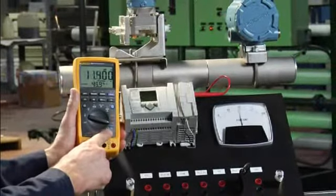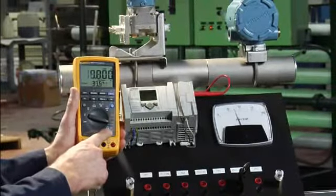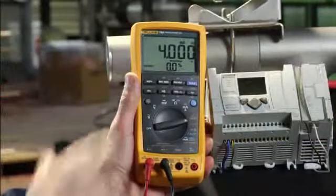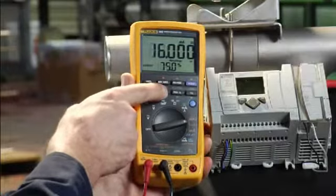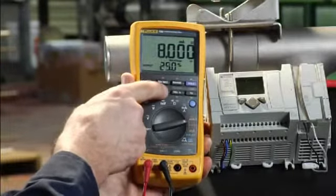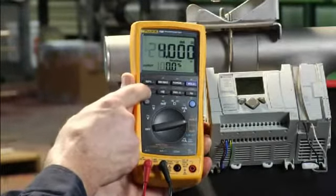In milliamp output mode, you can manually change the milliamp output to verify devices such as PLC I/O or a local indicator.